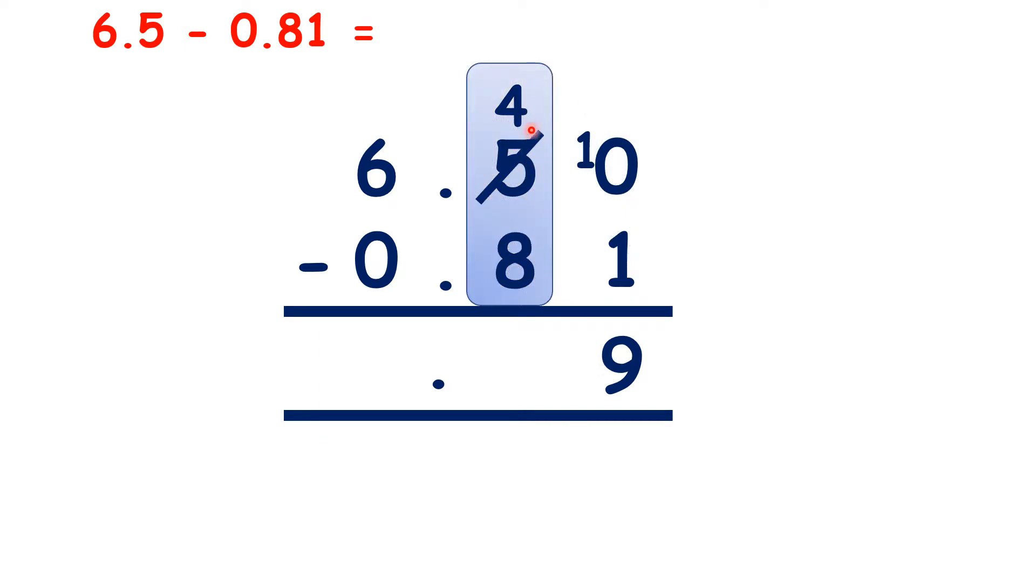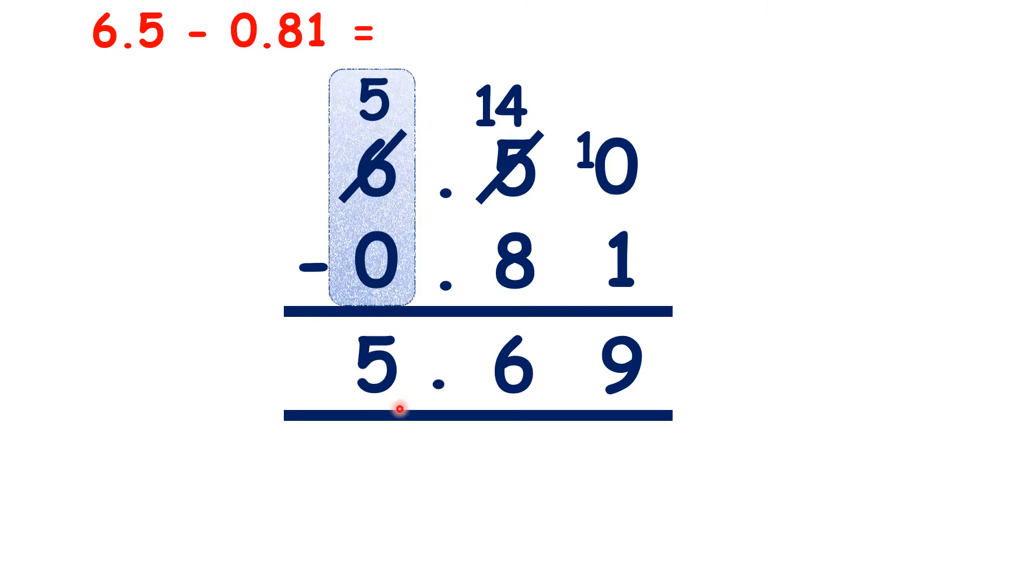On to our tenths, we can't do 4 minus 8, so again we need to exchange to make 14 tenths minus 8 tenths, which is 6 tenths, and now 5 minus 0 is 5, so that gives us our answer 5.69.